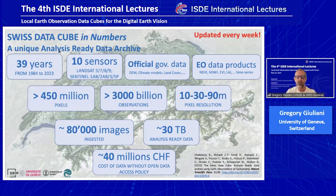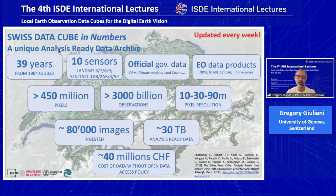Not only from satellite data — what is really interesting is the cost saving with the open data license: it's around $40 million of data stored in the data cube. If we think that every pixel is an observation on the ground, we store more than 3,000 billion observations of Switzerland. As you know, Switzerland is a really small country compared to others around the world, but that gives you a sense of what is in the data cube.